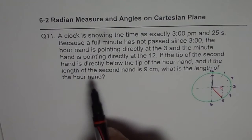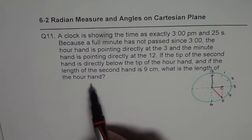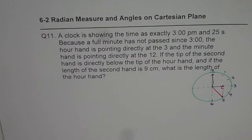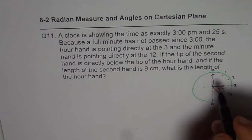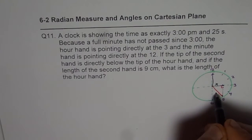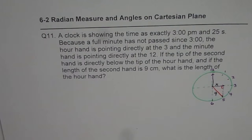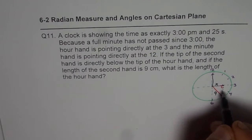If the length of the second hand is 9 cm, what is the length of our hand? That is the question. So what we will do is, let the hour hand length be x and we know second hand is 9 cm. And we also know this is a right triangle.